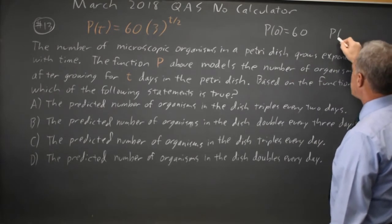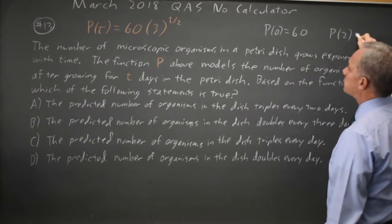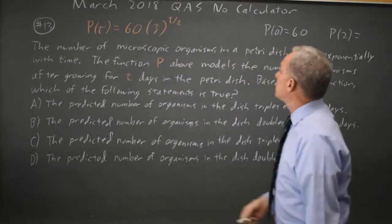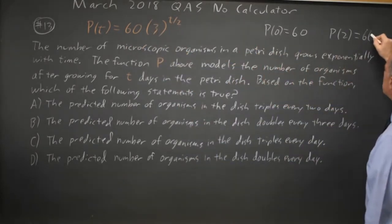And P of, they said every two days, so let's look at T is 2, which is 60 times 3 to the two halves, which is 60 times 3, which is 180.